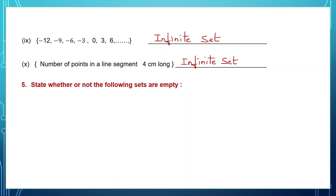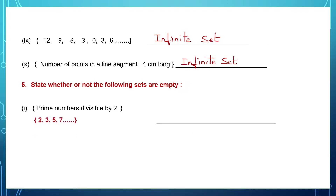State whether or not the following sets are empty. An empty set is one in which there is no element inside. Question 1: prime numbers divisible by 2. These are a few prime numbers: 2, 3, 5, 7. In that, there is one prime number — 2 — which is divisible by 2. That means this set will have one element in it, so this set is not empty.